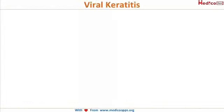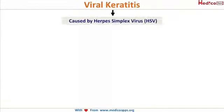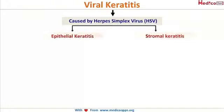Viral keratitis is caused by herpes simplex virus — herpes viruses are the ones that affect the cornea; most other viruses don't. It can affect the cornea in two different ways: as an epithelial keratitis only, or it can go deep into the stroma and cause a stromal keratitis.